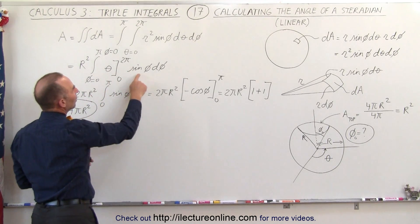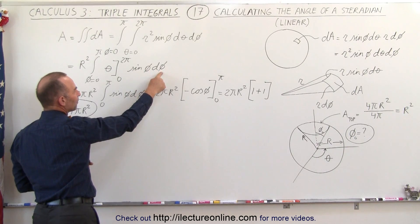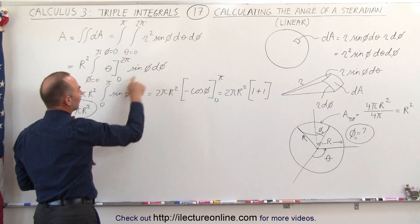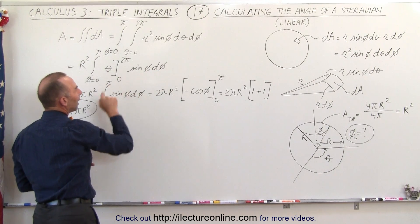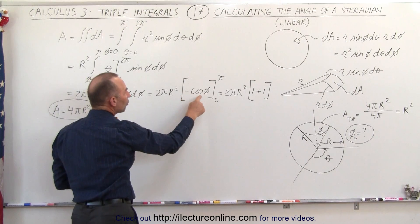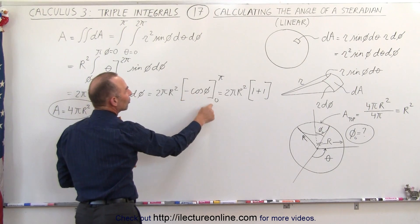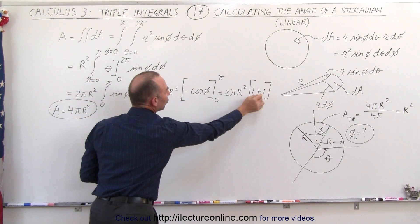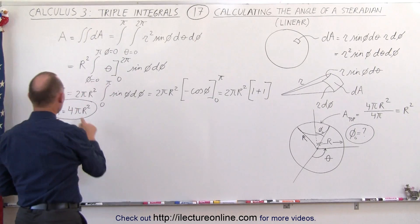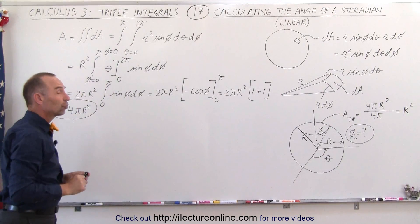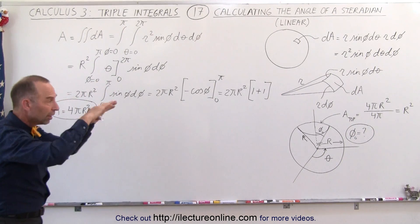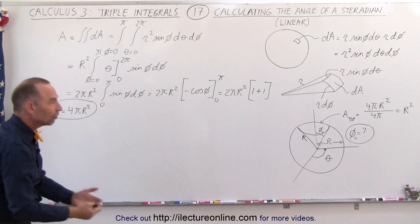Then we integrate sinφ dφ. If we integrate sinφ dφ from 0 to π, that becomes minus cosφ from 0 to π, which equals 2. So 2 times 2π r² is 4π r², which is the full surface area of the sphere.